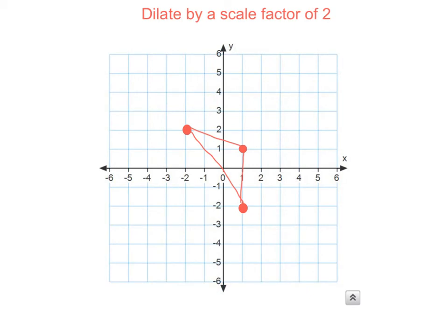The last type of transformation we're going to do is a dilation, which makes things bigger or smaller. When you see a scale factor, you know that's what you're going to use to multiply. So if you have a scale factor of 2, everything is going to be times 2.